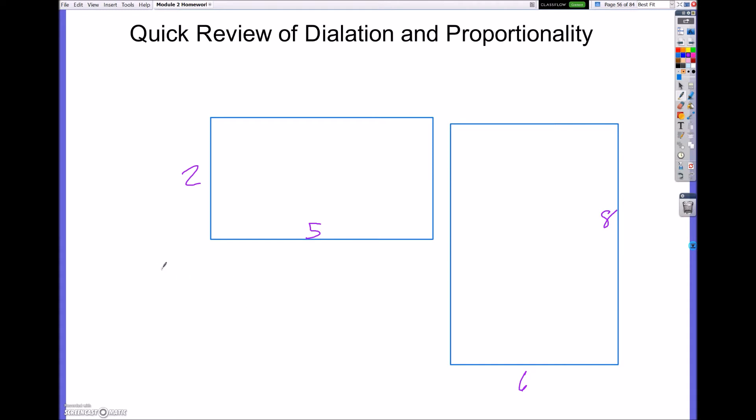So when we set this up, shorter side with shorter side, it will be 2 over 5 is equal to 6 over 8. And as you can see that these two are actually not proportional. So that's one way to be able to tell.